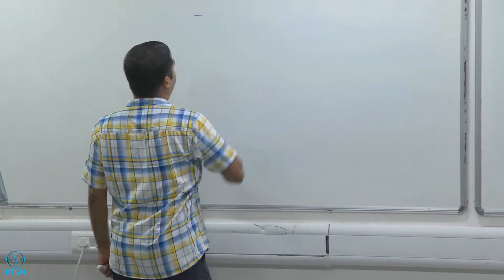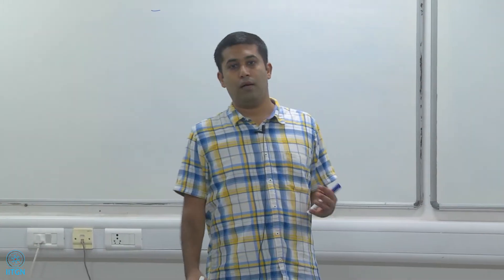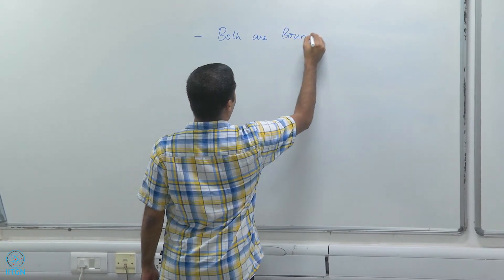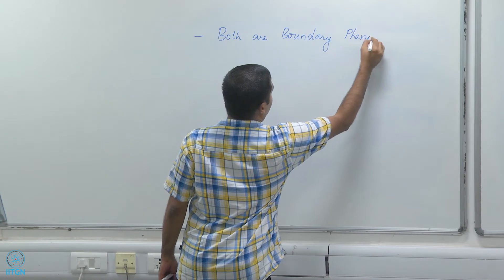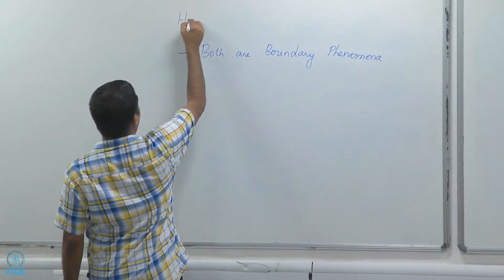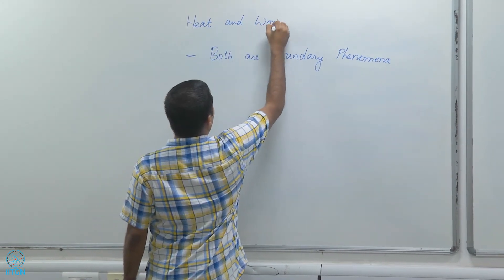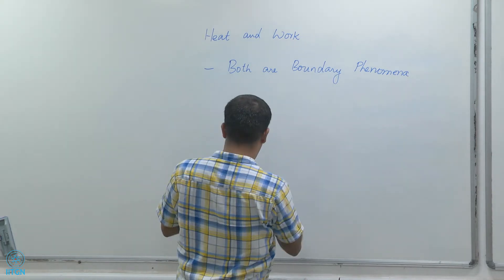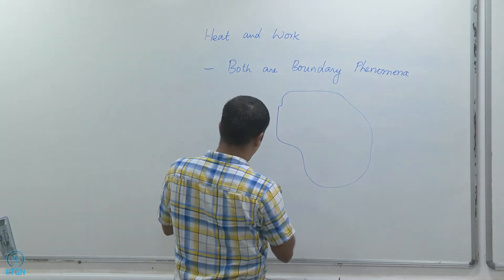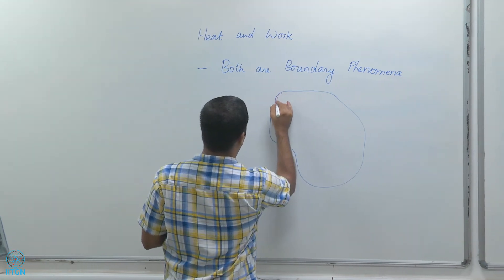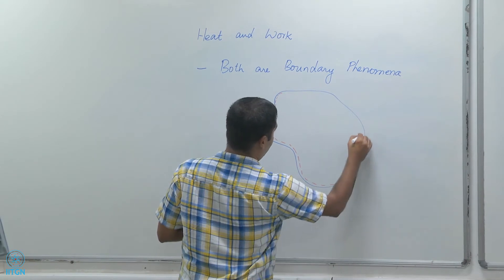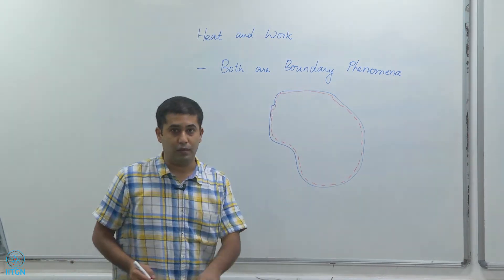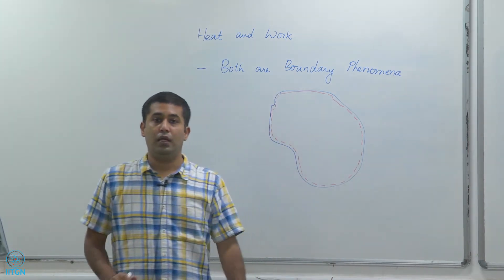One of the first things we should recognize about heat and work is that both are boundary phenomena. Both are boundary phenomena, which means that if I have a system — any arbitrary system — I should look for heat and work only at the boundaries of the system. What happens inside does not constitute heat or work.